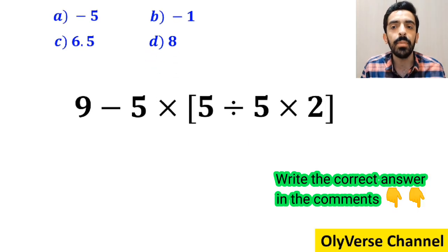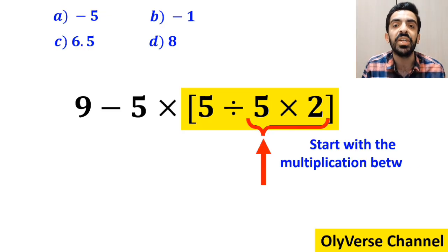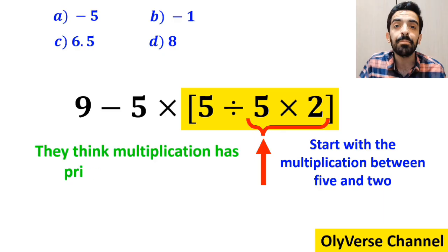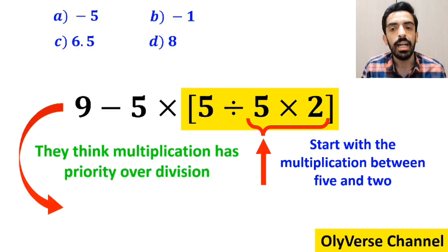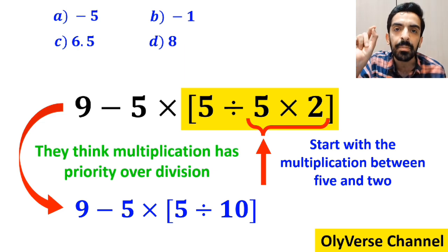Also, some other people, to solve this question, first go straight to the expression inside the brackets and start with the multiplication between 5 and 2, because they think multiplication has priority over division. So, instead of the entire expression, they write 9 minus 5 times 5 divided by 10 inside the brackets.